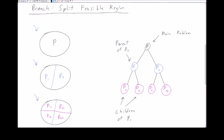We can think of this branching operation in terms of a tree. The root of this tree is our original feasible region P. Every time we branch we make children of our node. So our initial branch creating P1 and P2 is represented by nodes P1 and P2, which are children of P. The further branch creates P11 through P22 — P11 and P12 are children of P1, while P21 and P22 are children of P2, since their regions are sub-regions of P2.